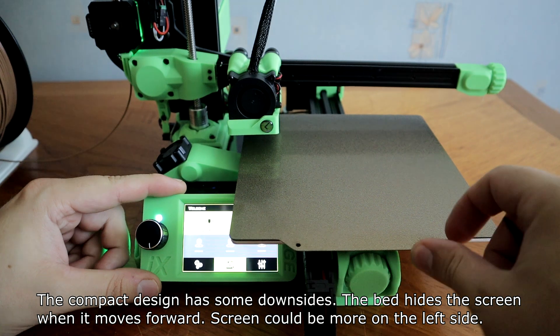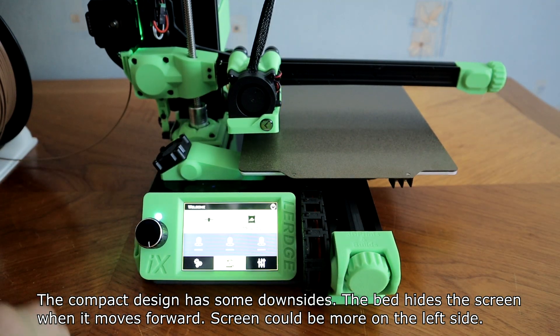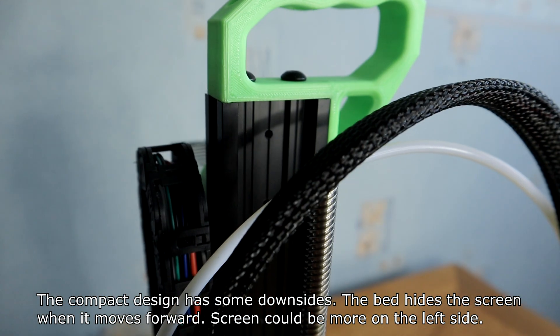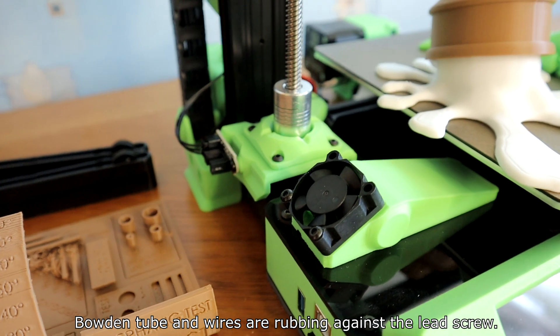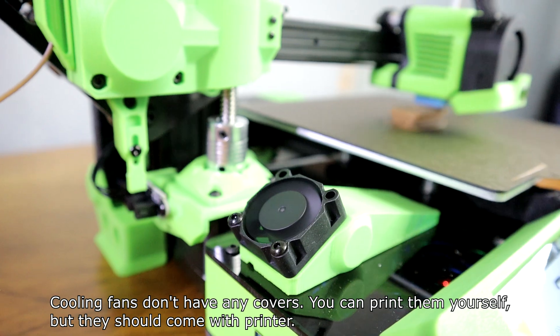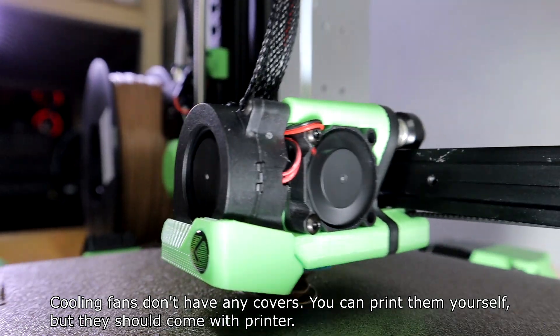The compact design has some downsides. The bed hides the screen when it moves forward. The screen could be more on the left side. Bowden tube and wires are rubbing against the lead screw. Cooling fans don't have any covers. You can print them yourself, but they should come with the printer.